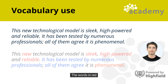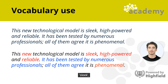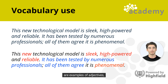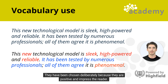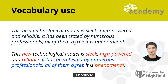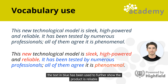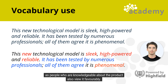The words in red — new, sleek, high-powered, reliable, and phenomenal — are examples of adjectives or describing words. They have been chosen deliberately because they are positive and impress the reader. Furthermore, the text in blue has been used to further show the product is reliable, as people who are knowledgeable about the product also view it favorably.